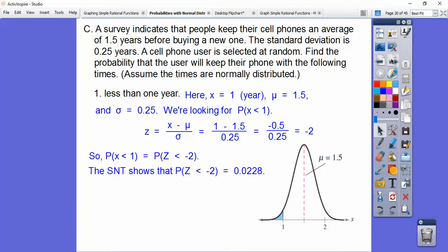So we're looking for the probability that a Z-score is less than negative 2 standard deviations away. So we look up our standard normal table, and make sure you pull your books out and look it up. And so negative 2, which is negative 2.00, so you look that up, and you should get 0.0228, which just means that about 2.28% of the cell phone users will keep their phones for less than a year.